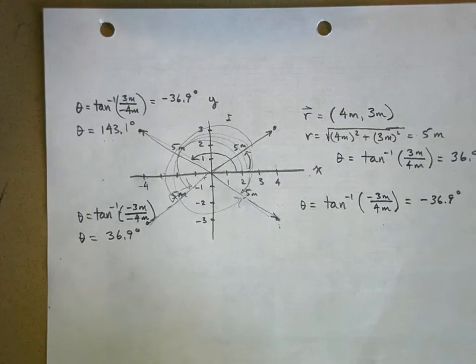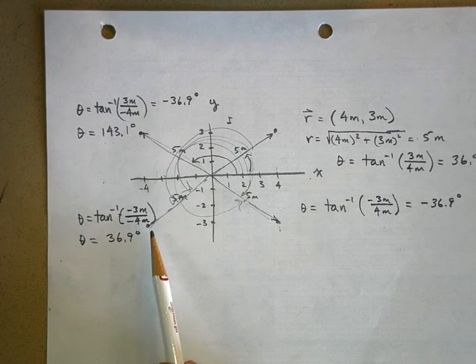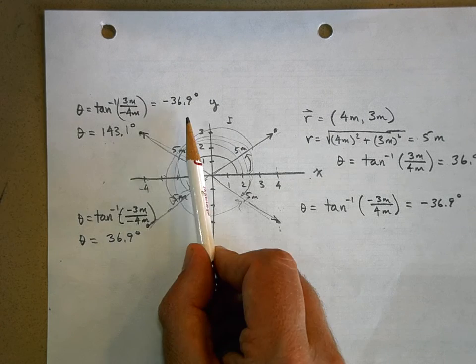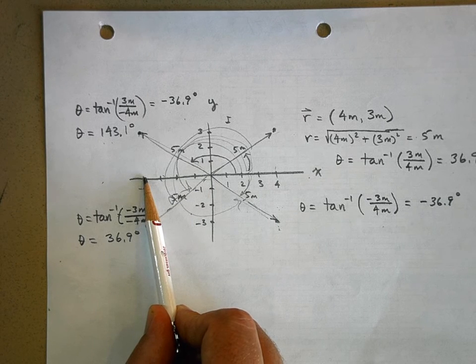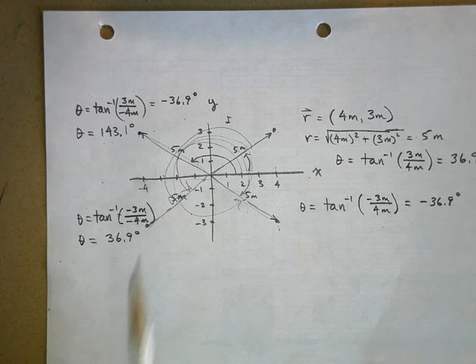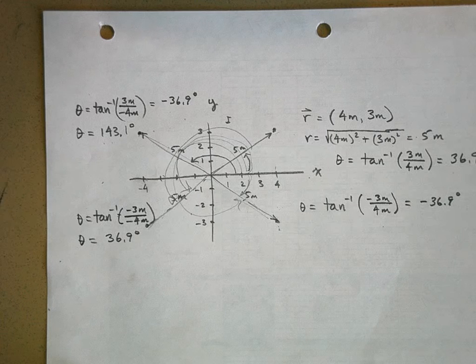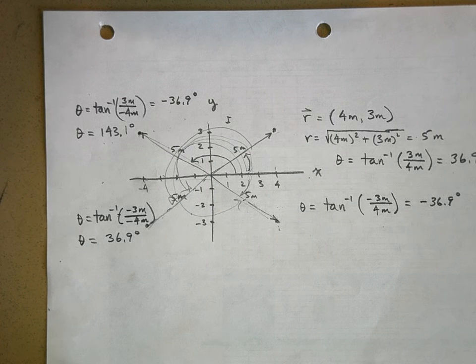So look, in both, on the left side, quadrant 2 and 3, your x component is negative. And on both of these, I had to add 180 degrees to get to the right angle, or the correct angle.